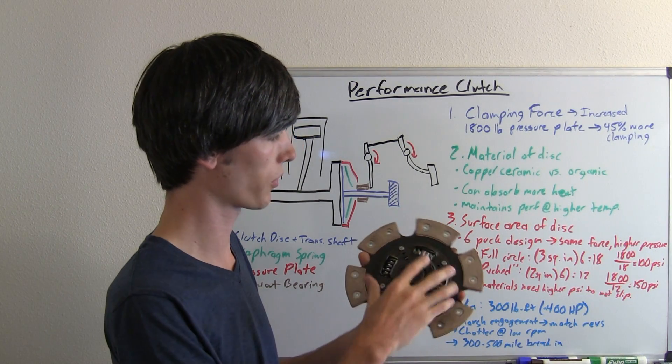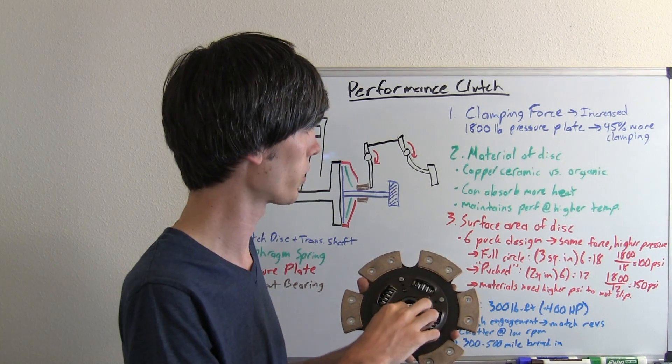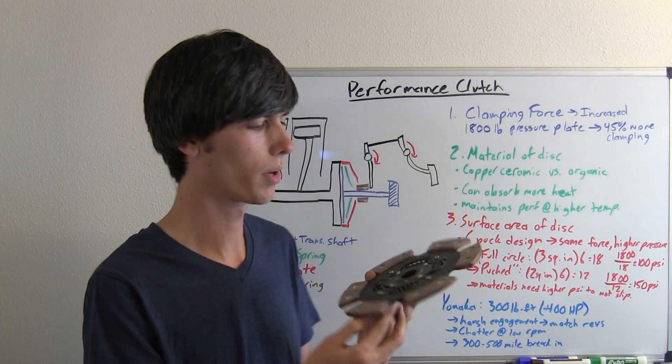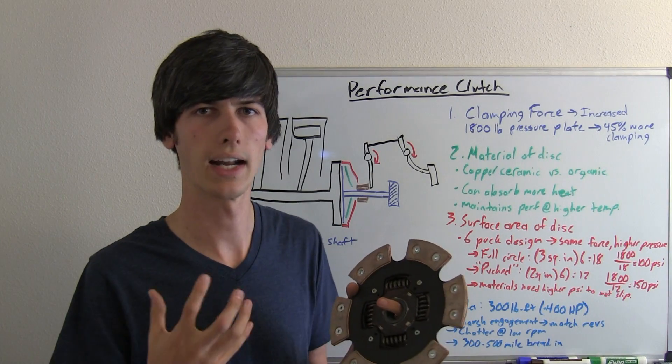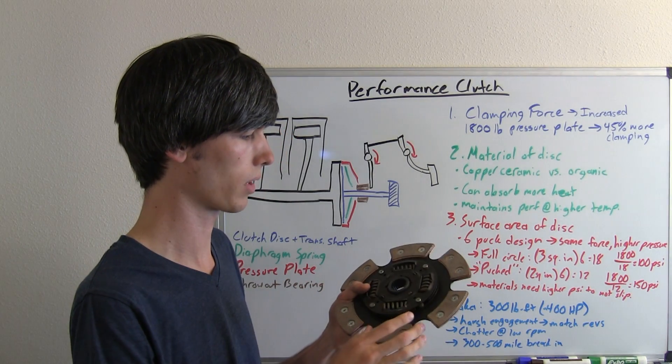uses a copper ceramic material rather than an organic material like most typical clutches. And basically the reason you're going to use a copper ceramic is that it can absorb a good amount more heat and it maintains its performance at higher temperatures than a typical clutch or an organic type clutch.